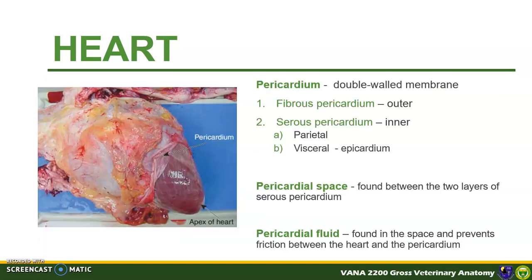The heart is enclosed by the pericardium, a double-walled membrane heart sac. It is composed of an outer fibrous pericardium and an inner serous pericardium. The serous pericardium is further divided into a parietal pericardium and a visceral pericardium. The visceral part is also known as the epicardium. The space between the two layers of the serous pericardium is called the pericardial space, which contains pericardial fluid that prevents friction between the heart and the pericardial sac.